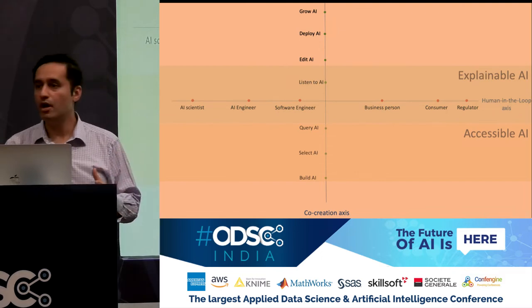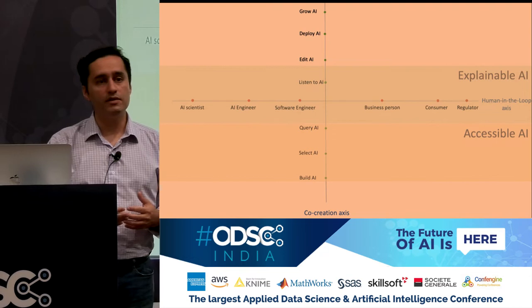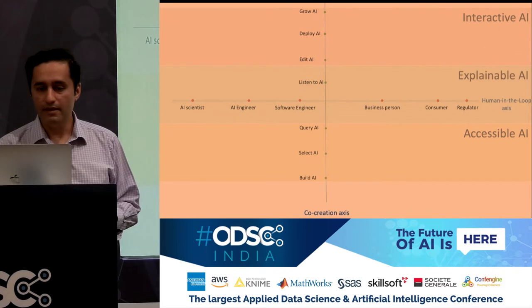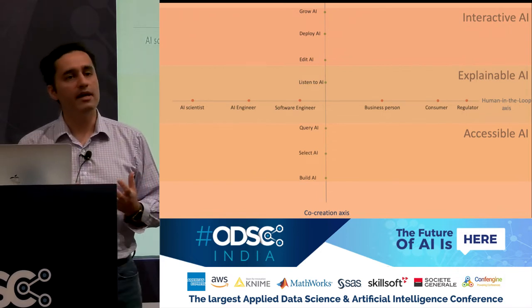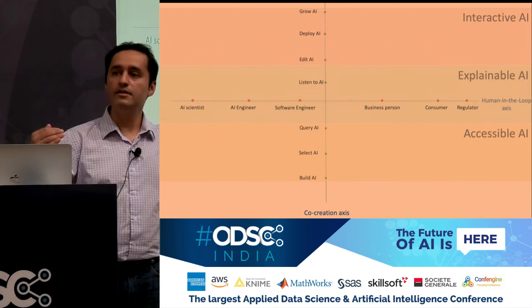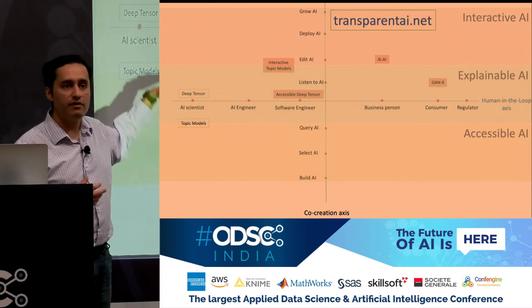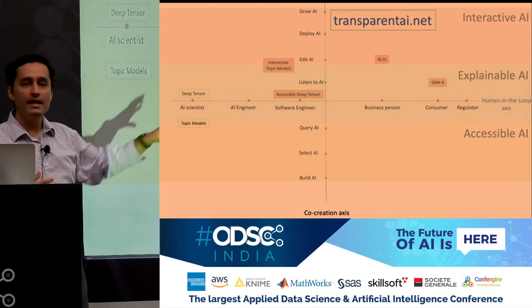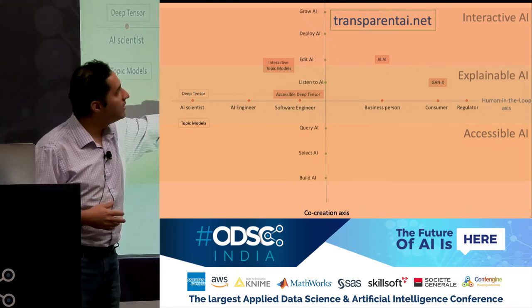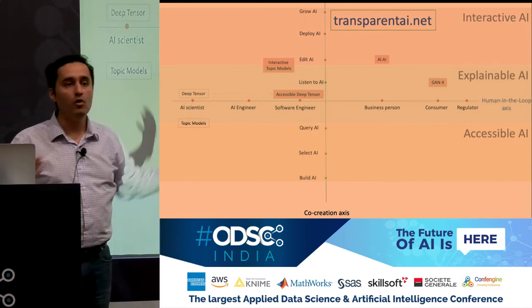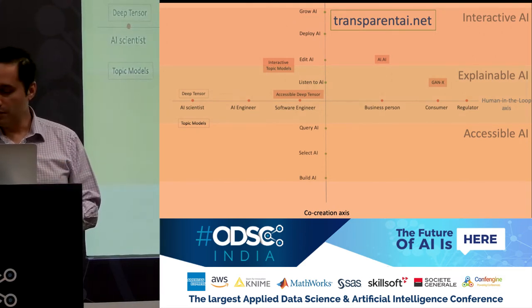Perhaps the most attention as a term has been put on explainable AI — a set of technologies that allows AI systems to complement their predictions and decisions with an explanation as to why they came to a particular decision. And then, most interestingly in terms of increasing the agency of everybody to interact with AI systems, there's an emerging set of technologies that allows you to edit the AI directly, termed interactive AI. Our research team broadly works on these three aspects of transparency for different kinds of humans in the loop.